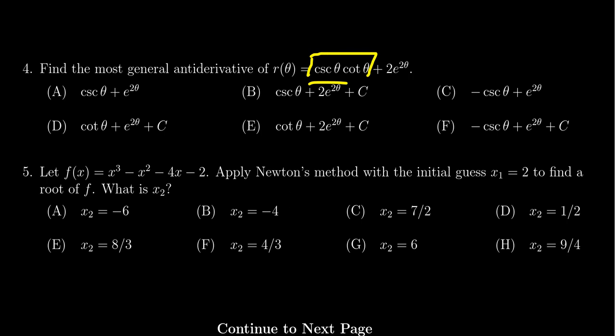Now the temptation is to be like, the antiderivative is cosecant, but that's not exactly right. If you take the derivative of cosecant theta, you actually get negative cosecant theta cotangent theta. And that's not exactly what we have right here.